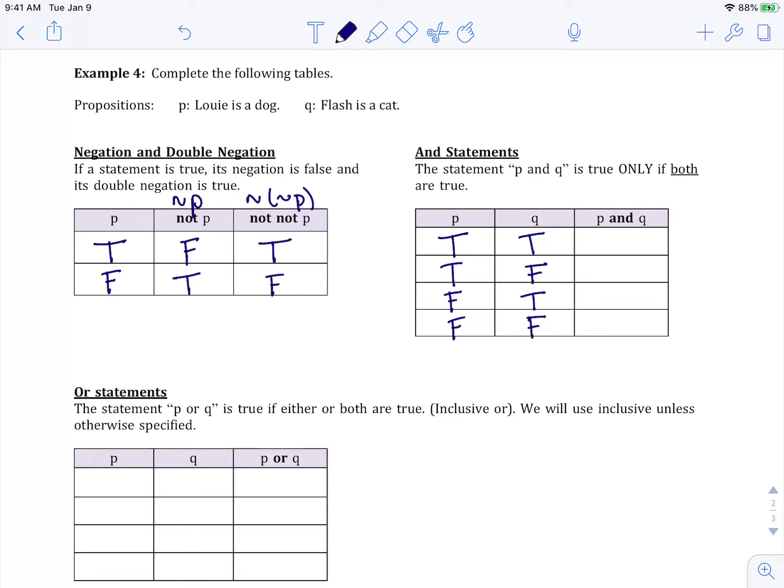So I'm claiming here, Louie is a dog and Flash is a cat. Both of those are true, so the whole statement is true. Louie is a dog and Flash is not a cat. That is not true, right? Because they both have to be true because it's an AND statement. Louie is not a dog and Flash is a cat. The whole thing is false because one of them is false. Louie is not a dog and Flash is not a cat. Both of those things are false, so the whole statement is false. So the only way you have a true statement with ANDs is if they're both true.